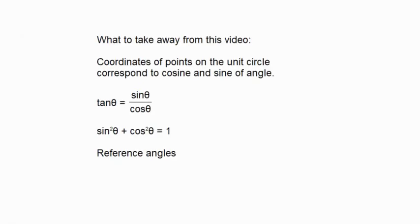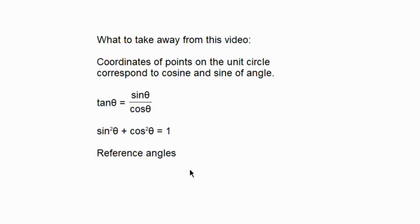What I want you to take from this video: the unit circle — coordinates on the unit circle give you the cosine (x) and sine (y) of the angle. The tangent of theta is sine divided by cosine. And sine squared plus cosine squared equals one — a very important fun fact. Finally, reference angles: what they are and their purpose. I will see you at the next video. I hope this helped. Bye.